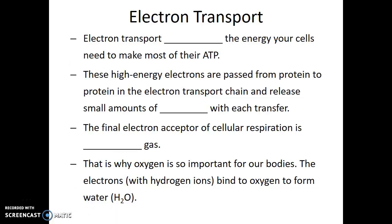Electron transport releases the energy that your cells need to make most of their ATP. These high-energy electrons are passed from protein to protein in the electron transport chain and release small amounts of energy with each transfer.